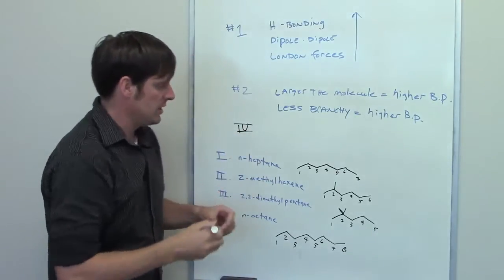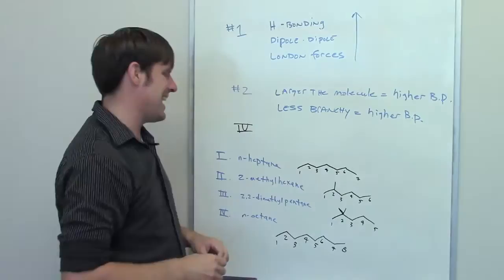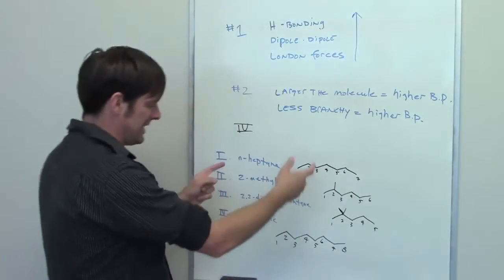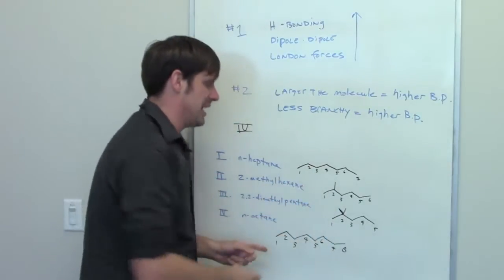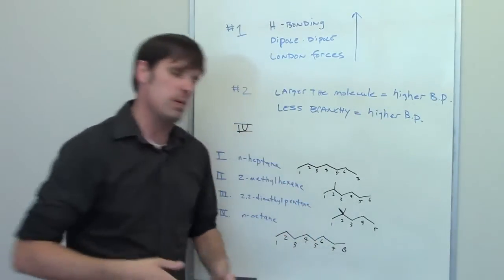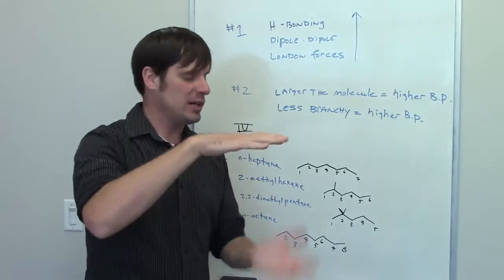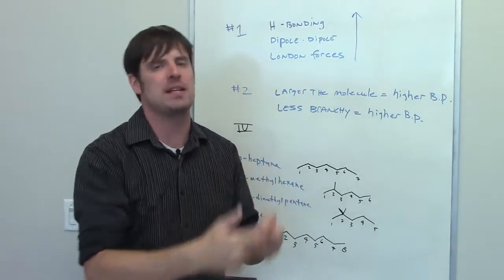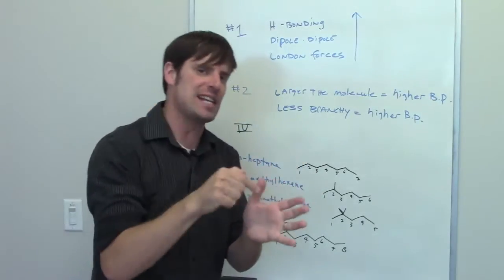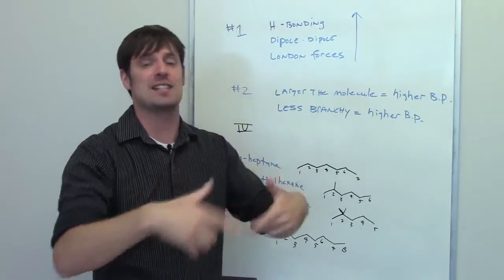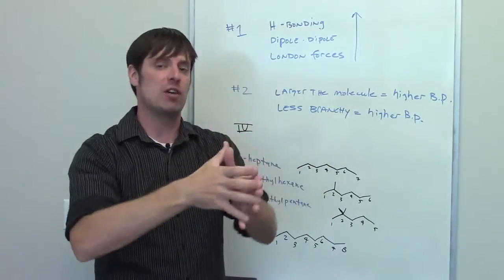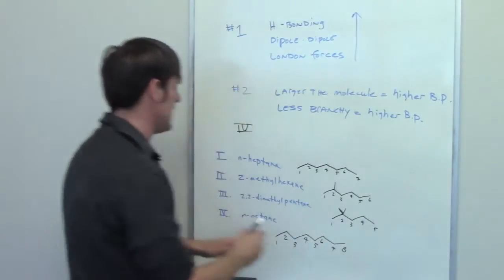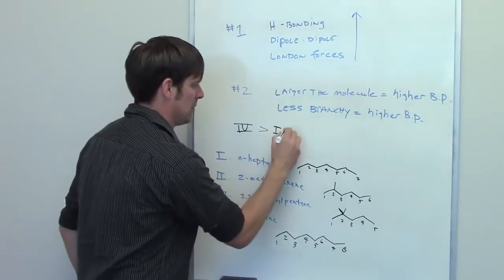N-heptane doesn't have branching, but it is smaller than N-octane, which is why it has a lower boiling point. It's a nice straight molecule — same analogy as N-octane — but it just has one carbon less, which means it's a slightly shorter piece of Velcro, so it takes less heat to get them to separate than N-octane, and hence less heat to convert from a liquid to a gas — that is, to boil. So molecule number one, N-heptane, will have the next highest boiling point.